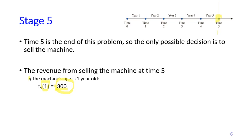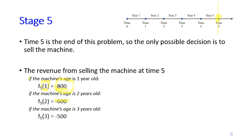If the machine's age is two years old, the cost becomes minus $600: F5(2). And if the machine's age is three years old, F5(3) is minus $500. We don't know yet which of these will apply in the optimal solution, because we are going backward until we reach time zero — at that point we'll know which age holds. For now, we need to write down all possible ages of the machine at the beginning of time five.